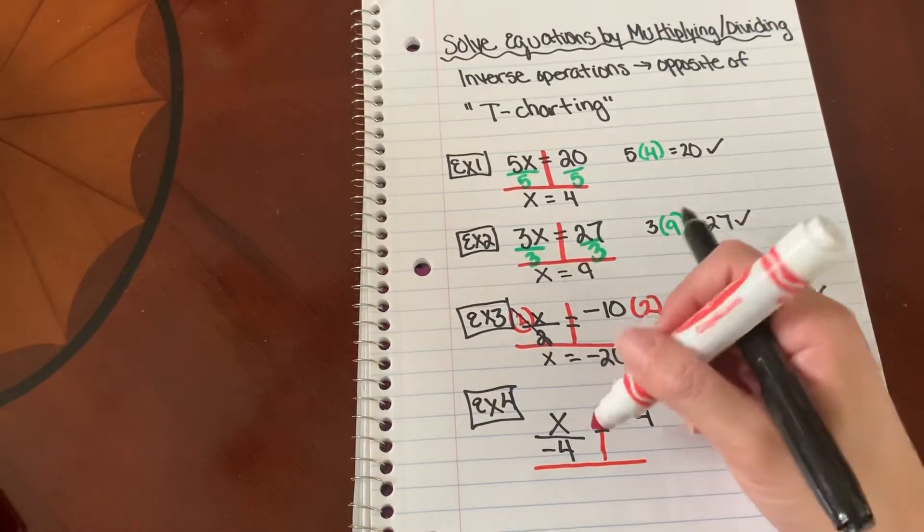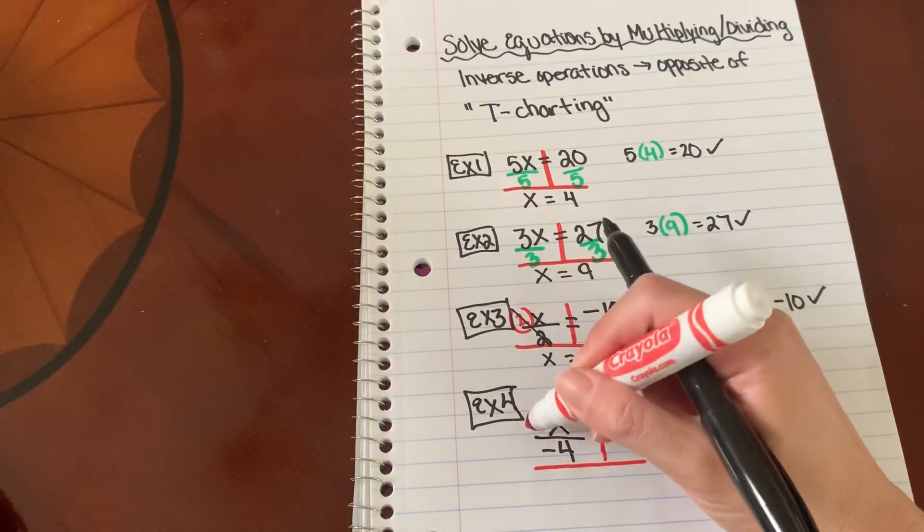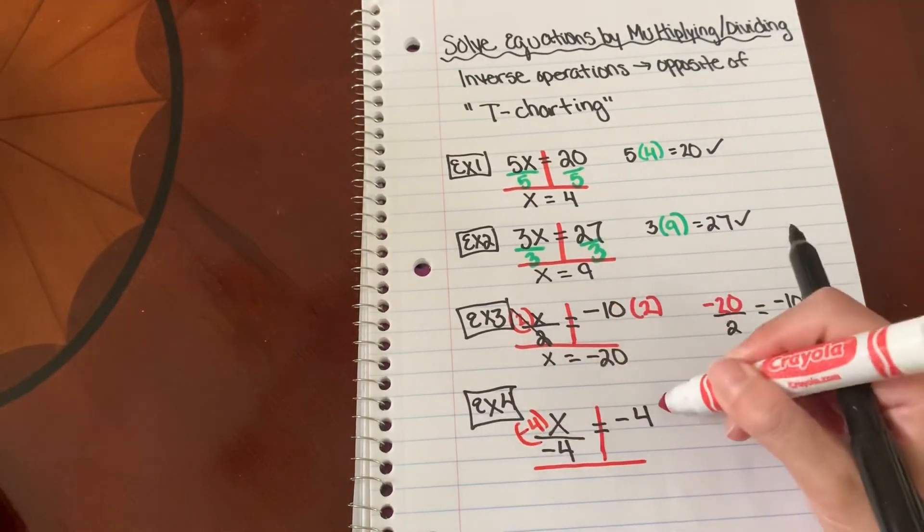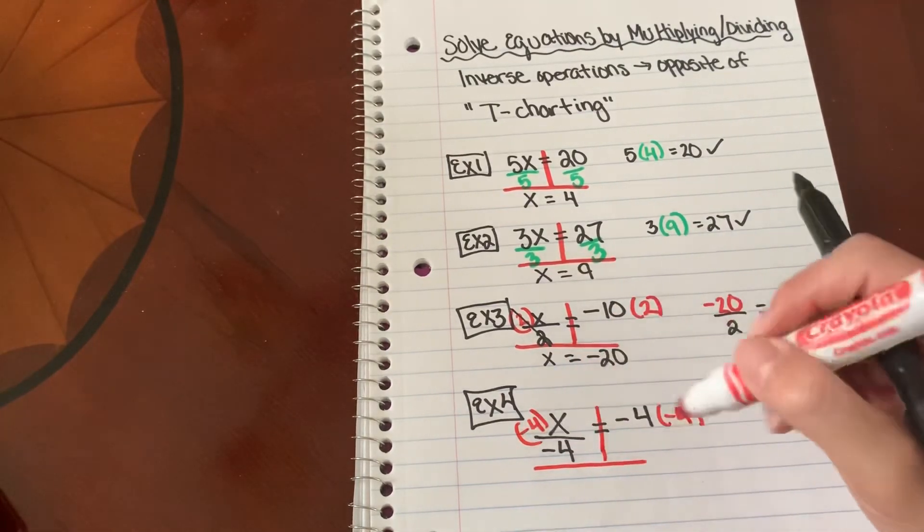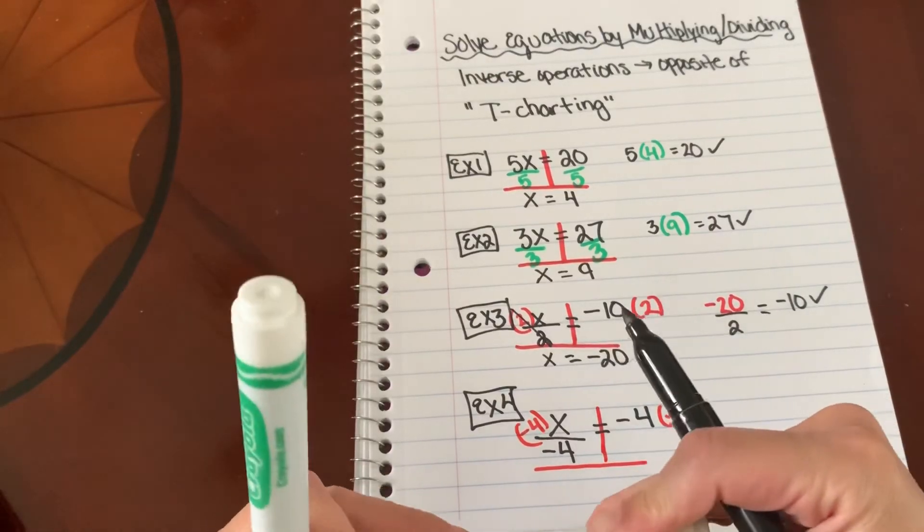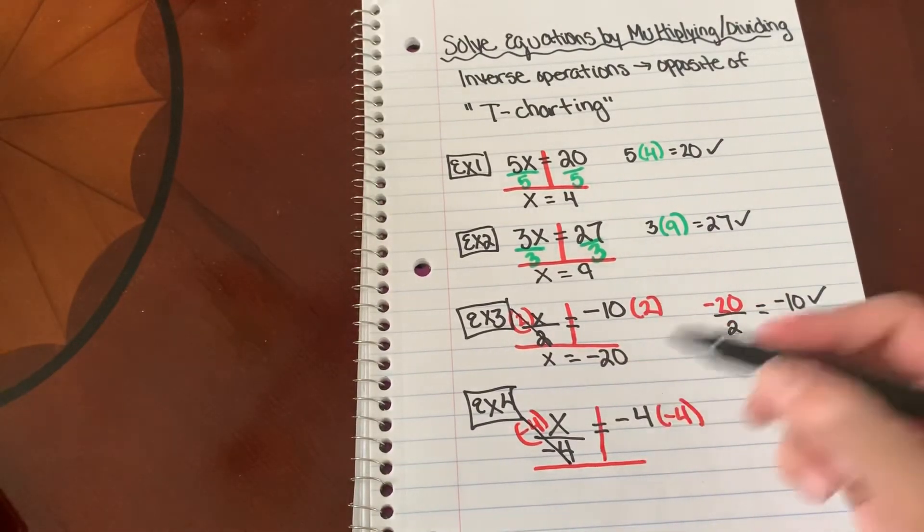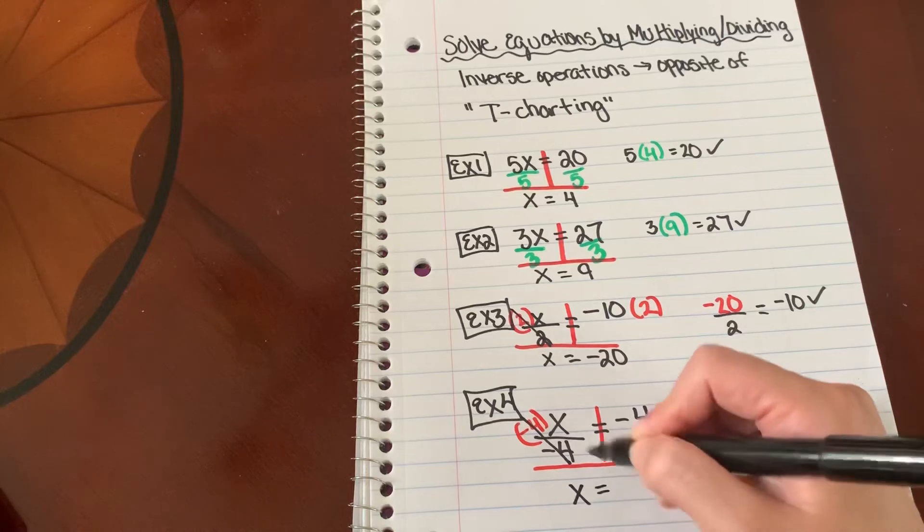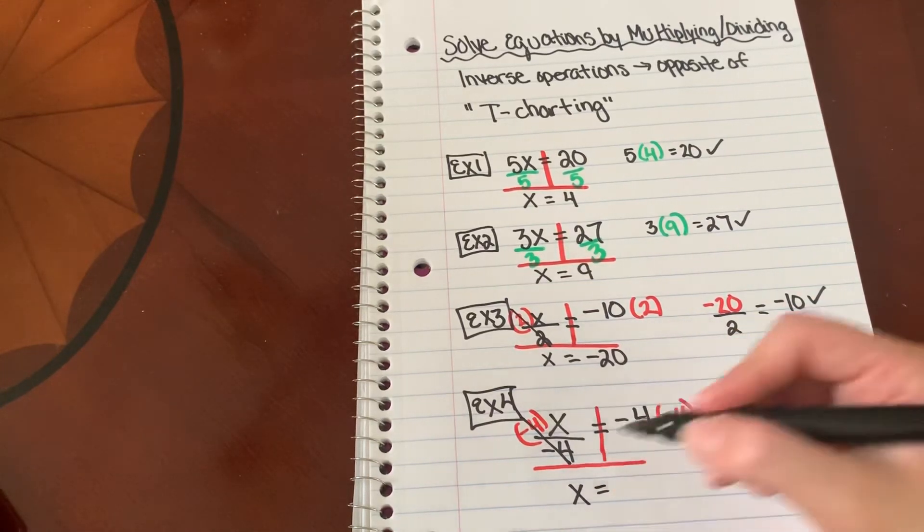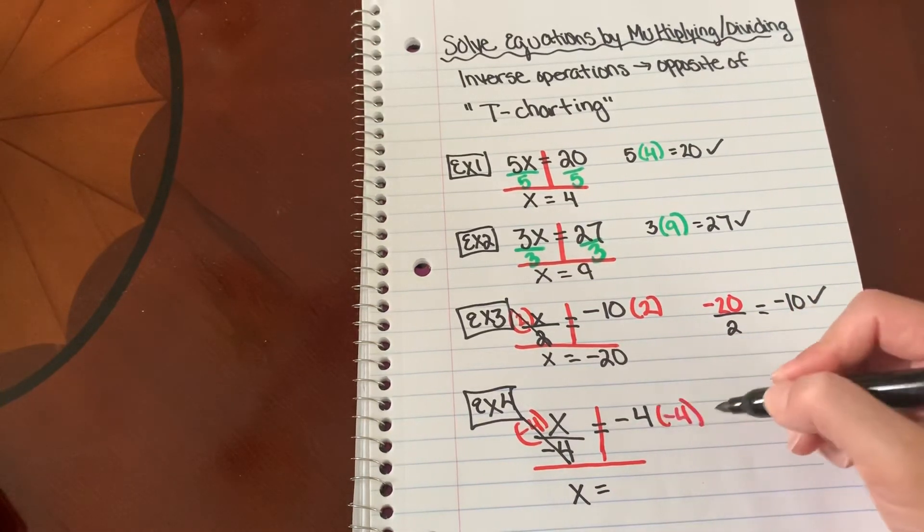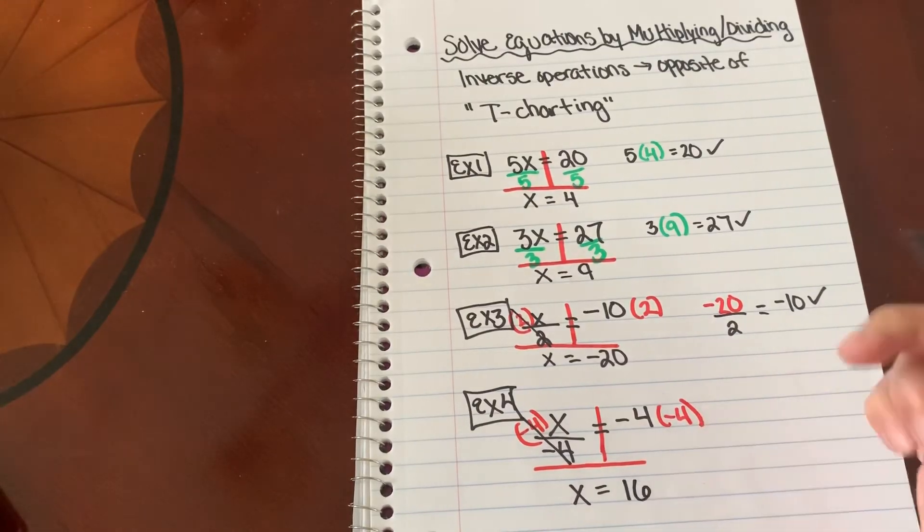What is the inverse operation of divided by negative 4? Well, we're going to multiply by negative 4 to both sides because, remember, your equations must be balanced. So this cancels out and you get your 1x because negative 4 divided by negative 4 is 1. And what is negative 4 times negative 4? Positive 16.